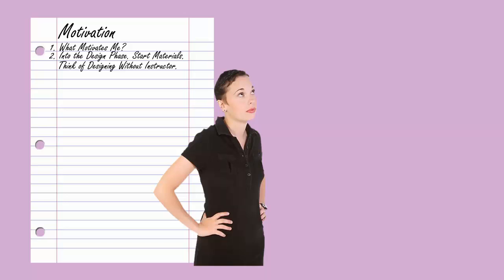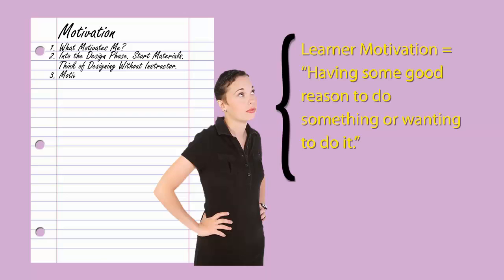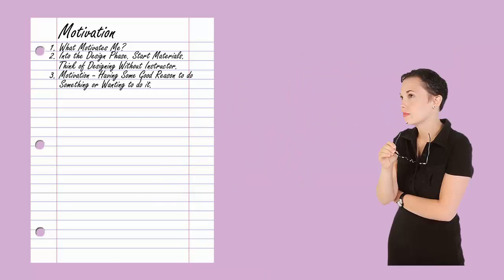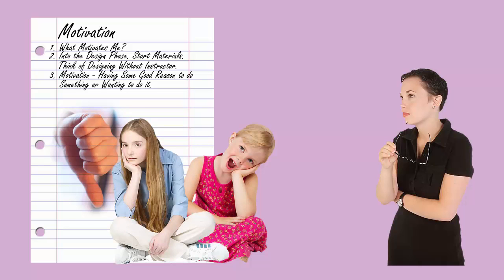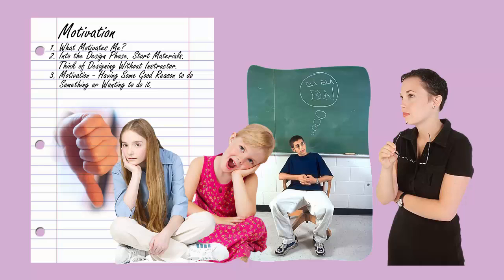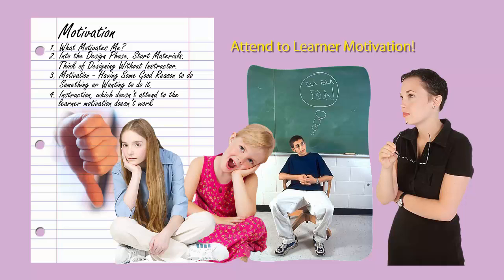For our purposes of instructional design, let's think of learner motivation as having some good reason to do something or wanting to do it. Your learner is going to have some reason for working with your instruction, and it can be different for each learner. If you can better understand learner's motivation, you'll develop better instruction. Can you think of instruction that you didn't care for or criticisms of instruction? Perhaps you found it boring, not of interest, or not applicable to what you were looking to learn. Often the instruction is criticized because it fails to gain or keep the learner's attention, or it fails to help the learner advance their skills or knowledge. Tending to motivation is critical to successful development of instruction.